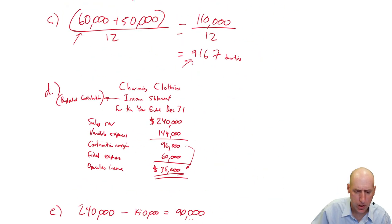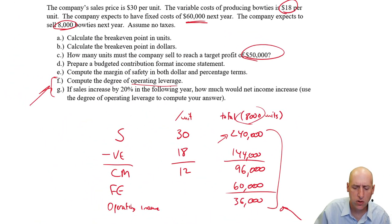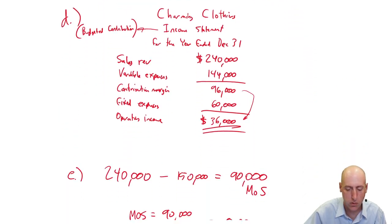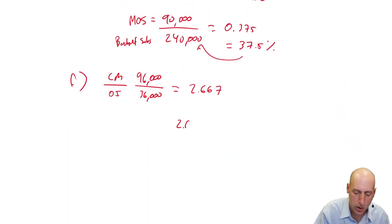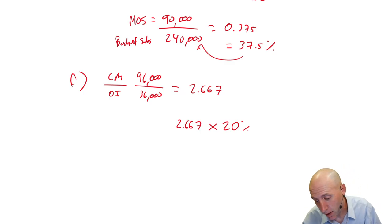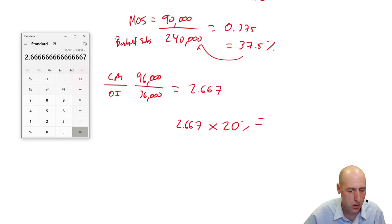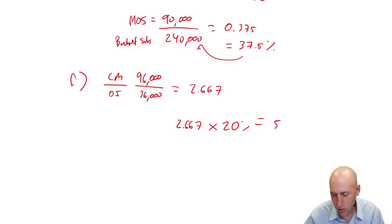So the final step then is G. G says, if sales go up by 20%, how much would we expect net income to increase? Use the degree of operating leverage to compute your answer. So 2.667 times 20%. So again, we expect to go up by 20 times for every percent increase in sales. We expect profits go up by the operating leverage factor times that percent change. 2.667 times 20% is 53.33%.